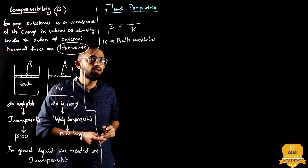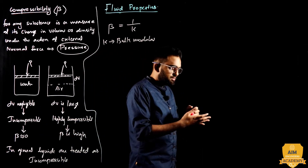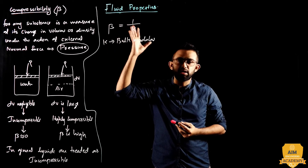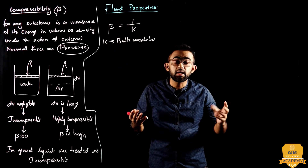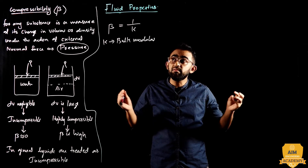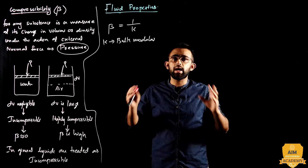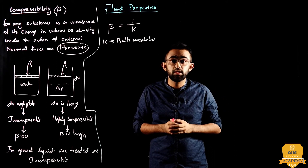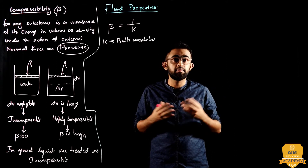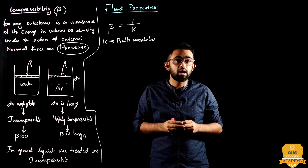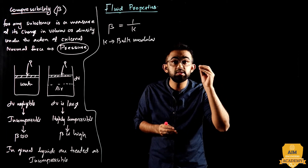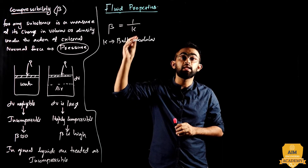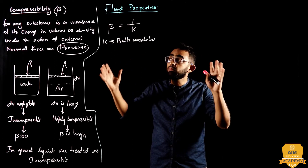What is Bulk Modulus? The compressibility beta is the reciprocal of Bulk Modulus K. This relationship — beta equals 1 by K — is important for university exams and competitive exams. You need to understand the concept of compressibility and Bulk Modulus clearly.